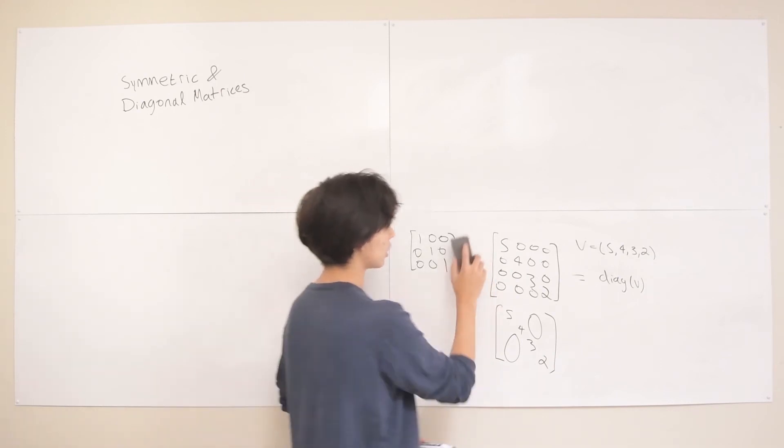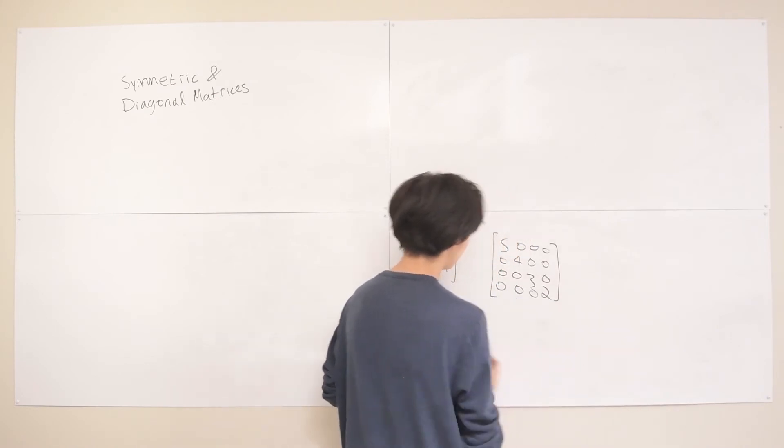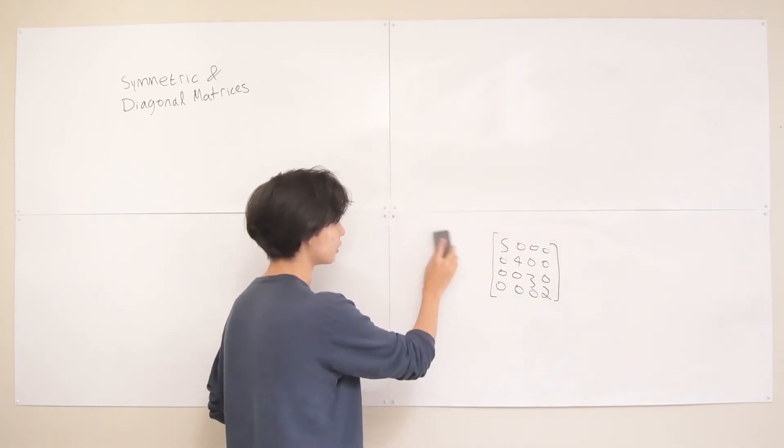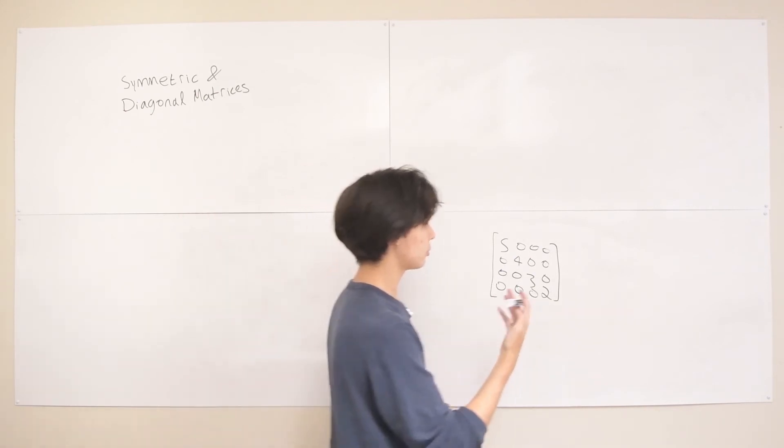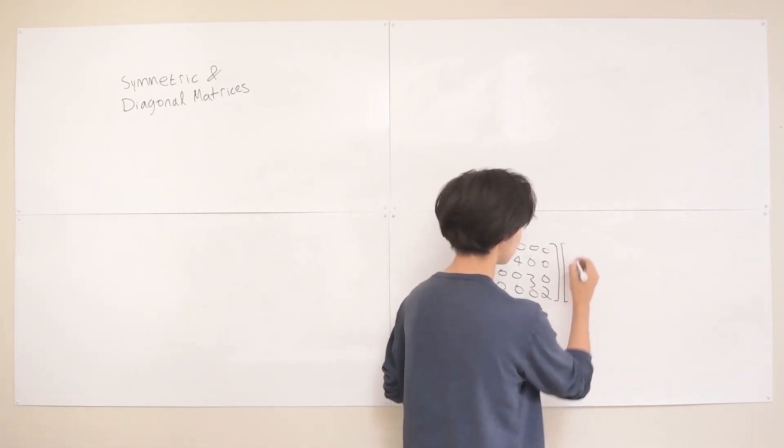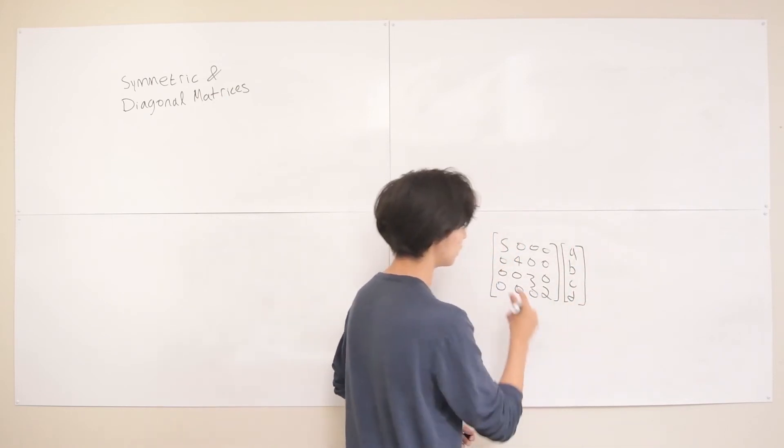One thing that's very important to kind of mention about diagonal matrices is when you multiply them. It's a lot easier than normal matrix multiplication. So say if we want to multiply this by a vector first. So let's multiply this by a vector. So let's say A, B, C, D.